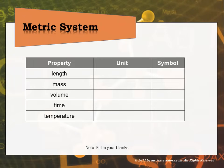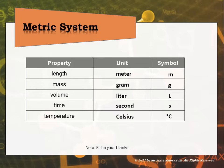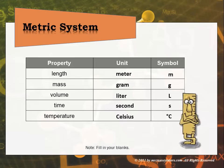The units in the metric system are: for length, the meter; for mass, the gram; for volume, the liter; for time, the second; and for temperature, Celsius.